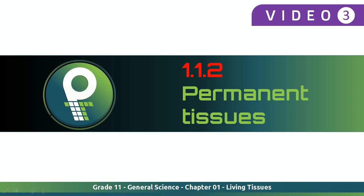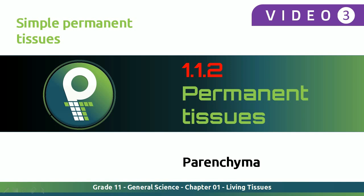Welcome to another session. This is video number three of Grade 11 General Science, Chapter One, talking about living tissues completely. We were talking about the simple permanent tissues, which have the same single type of cells. Under that, we saw there are three divisions: parenchyma, collenchyma, and sclerenchyma. Now we are here to talk about parenchyma tissue.